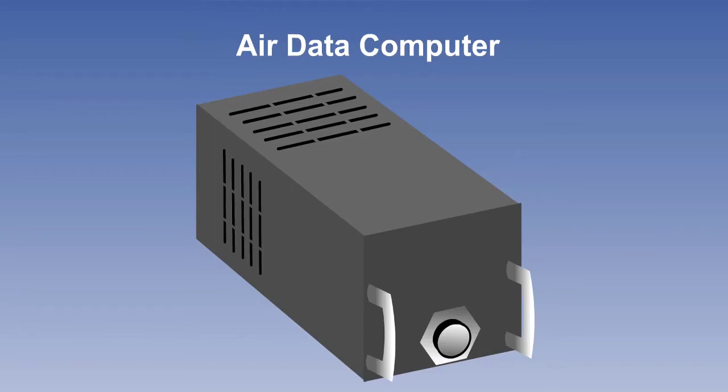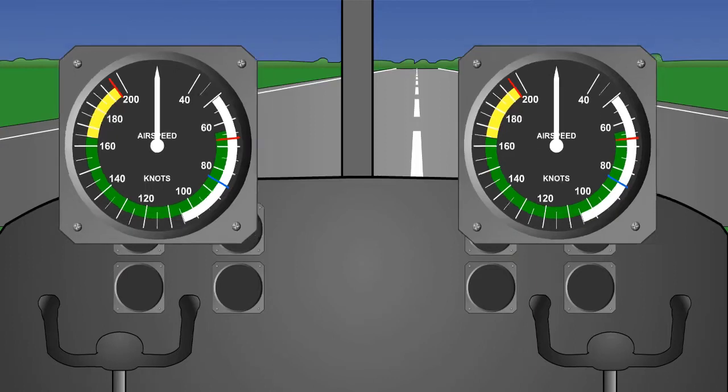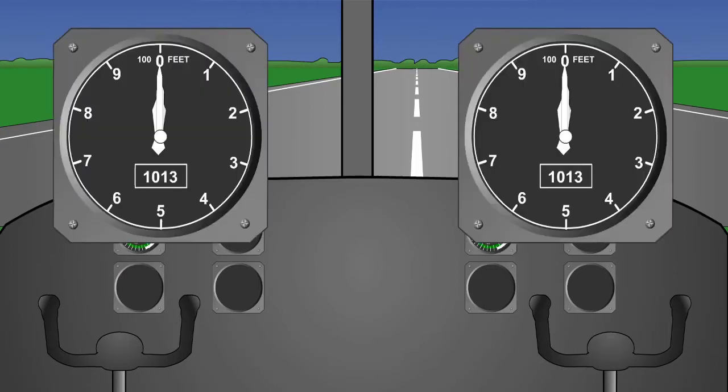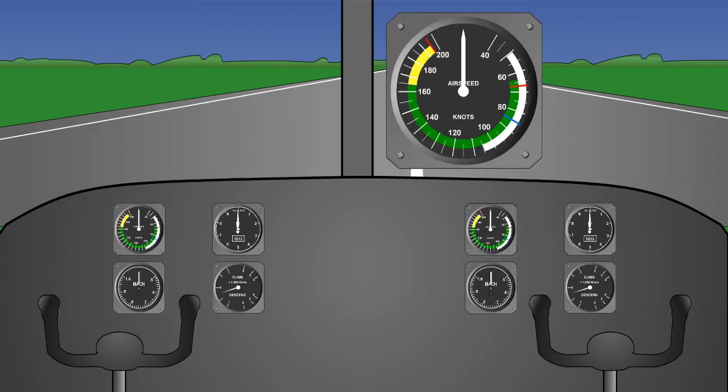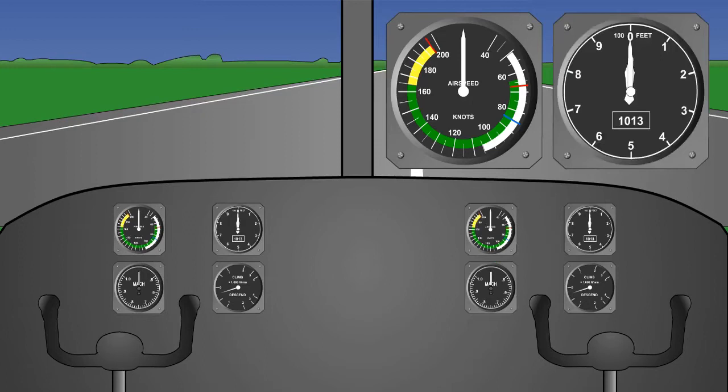Until the 1960s or 70s, an airliner would have had, for each pilot, an airspeed indicator, an altimeter, a VSI, and a Mach meter. Additionally, there would have been a standby ASI and a standby altimeter, possibly in the flight engineer's station.